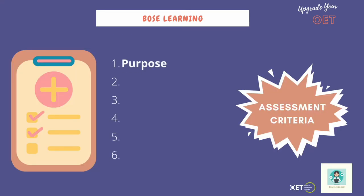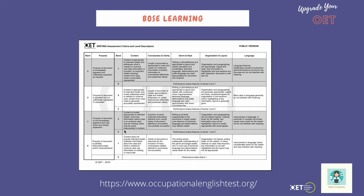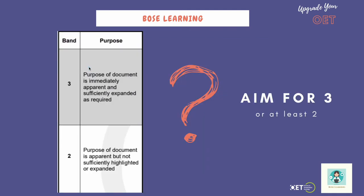We're going to be looking at the assessment criteria and there are six different ones that we need to look at, the first one being purpose. You can check these out online at the Occupational English Test website — they're freely available for everyone. Purpose is marked on a scale of zero to three. You need to be aiming for a three in order to get a B. Two is possibly okay but ideally you need to be getting a three. How do you do that?